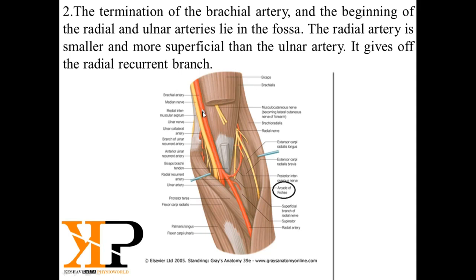Here in this diagram you can see that the brachial artery divides in the cubital fossa into the ulnar artery and the radial artery. The radial artery is more superficial compared to the ulnar artery. The radial artery gives off the radial recurrent branch — here you can see the radial recurrent artery, which is a small branch.